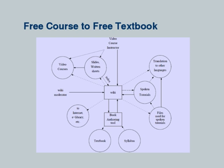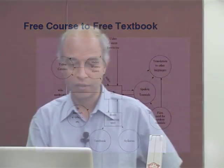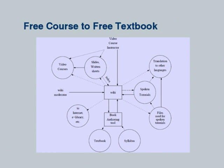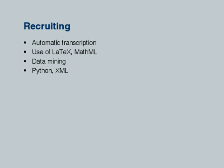Some manual intervention is required in the transcription and textbook creation — some material will not be added, some extra material will need to be removed. But if 70–80% of the content can be created in an automated fashion, through manual intervention you can fix the rest. This is the textbook project we are working on. It involves automatic transcription, use of LaTeX, MathML, data mining, Python, and XML. We need participation.